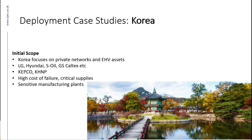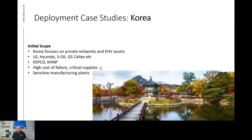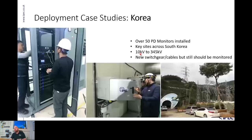Both of those have a very common factor: very high cost of failure. Looking at the EHV level of the network, failure is very costly. On the industrial side, failure is also very costly — sensitive manufacturing plants and sensitive power generation. Across Korea, we have over 50 monitoring systems installed in different networks, ranging from 10 kV up to 345 kV, covering switchgear and cables. Although the switchgear and cables at industrial and processing plants are quite new, the cost of a single failure or downtime is very high, and therefore we should still monitor these assets.